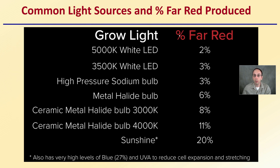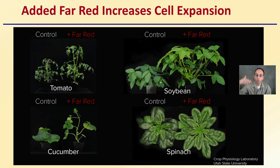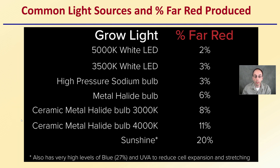Looking at common light sources and their percent Far Red produced — CMH lights and high-pressure sodium lights are examples. Sunlight does produce 20% Far Red light. However, sunshine also has high levels of blue light — about 27% including UVA — which reduces cell expansion and stretching. Some artificial lights produce more Far Red with a reduction in blue wavelengths, which is why you tend to get more stretching with those sources.